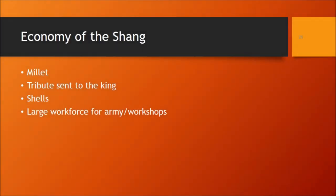A bit about the Shang economy. Millet was a very important crop. A big part of the economy was sending tribute to the king — most of the tribute was bones, which were then used to write oracle bone questions to tell the future. Shells may also have been a significant part of the economy — not a coin economy yet, but over 7,000 seashells were found in Lady Hao's tomb, and this is the case in other Shang tombs too. Large numbers of people were also put to work to build various buildings — monumental architecture, which is part of the definition of a civilization.